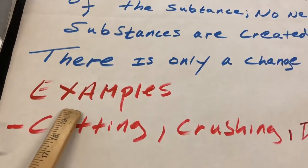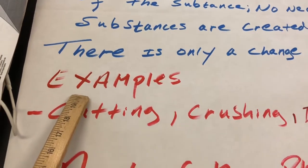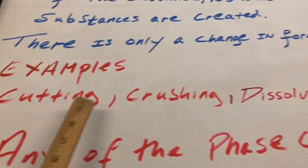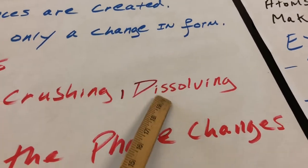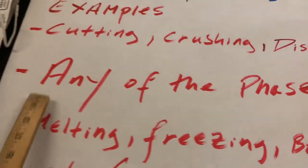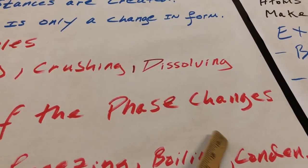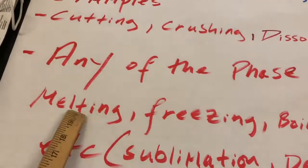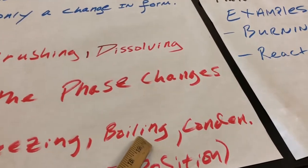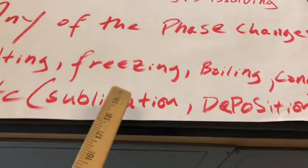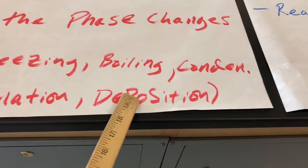Now, some examples of physical change, physical properties or physical process would be cutting, crushing or dissolving. Also, very important, any of the phase change, any type of phase change is going to be physical. For example, melting, freezing, boiling, condensation, also sublimation and deposition.